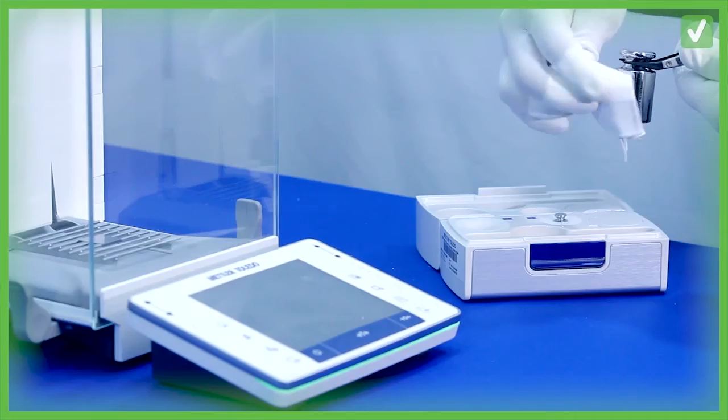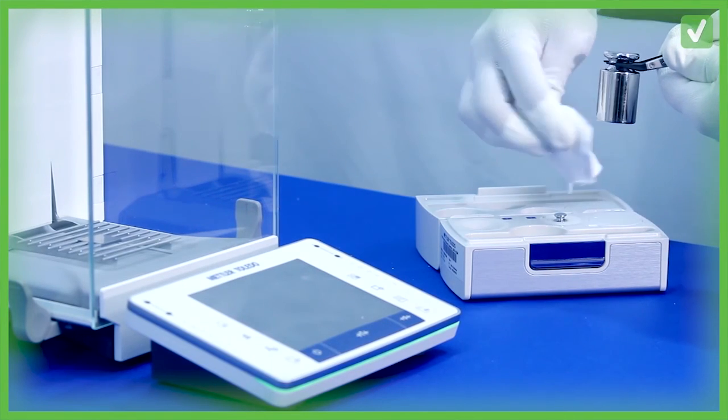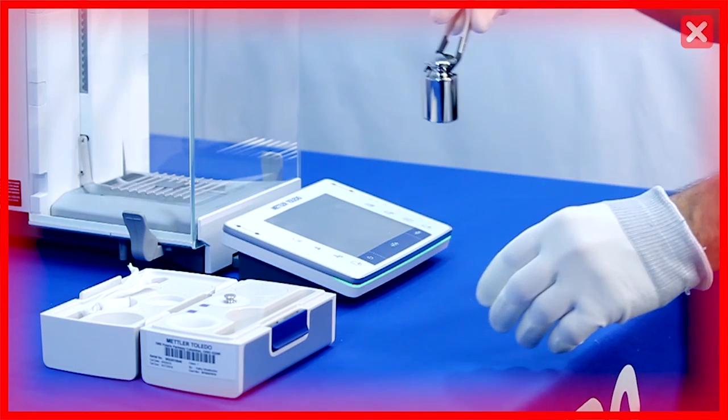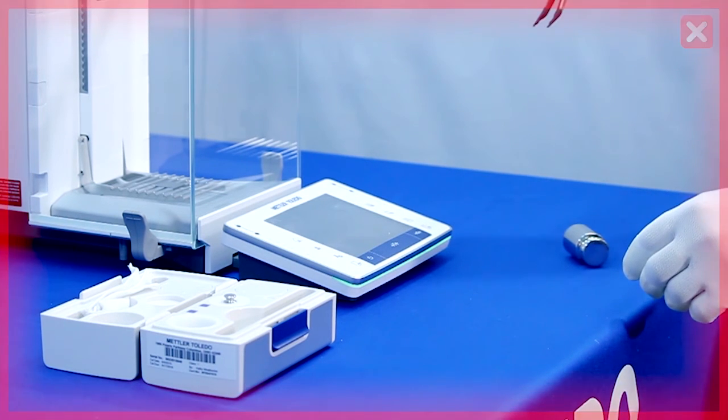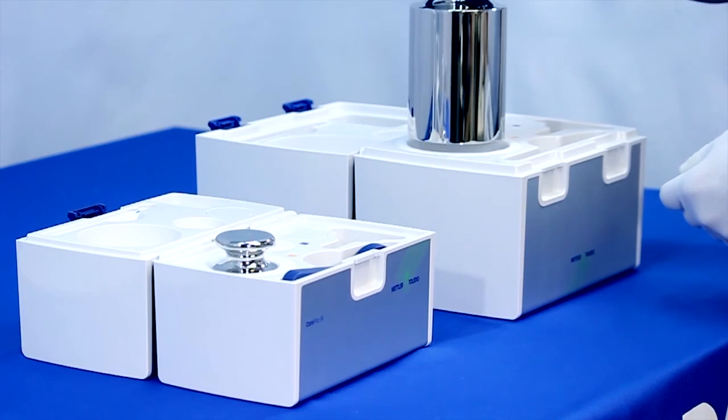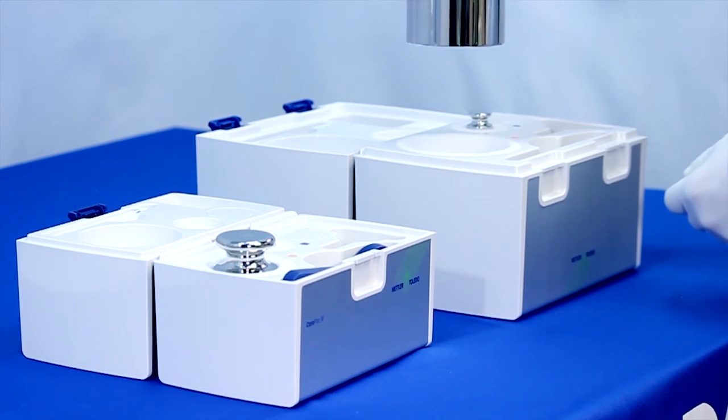Incorporate routine visual inspections into staff's normal routine as this can help catch evidence of mishandling. In the event a weight is dropped, it must be recalibrated. If this happens, call Mettler Toledo or visit our no wait weights program home page to initiate the recertification process.